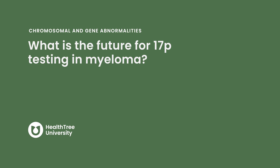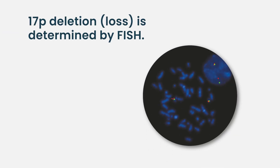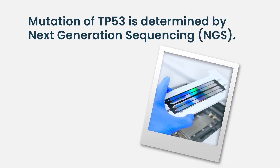What is the future for 17P testing in myeloma? The new definition of high risk will likely include not only 17P loss but also mutations. Currently, 17P loss can be determined by FISH and cytogenetics, but mutations require next-generation sequencing, which won't appear on a regular FISH report. We are really just scratching the surface, so stay tuned for new developments.